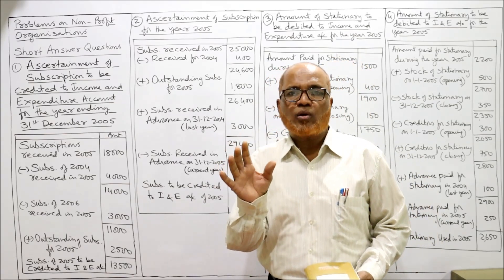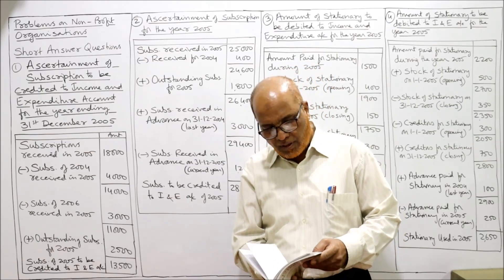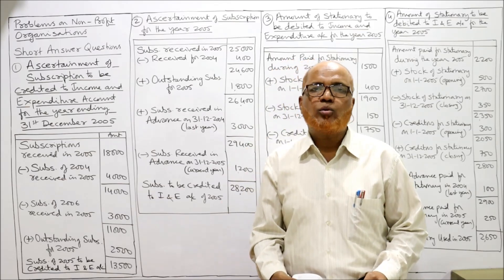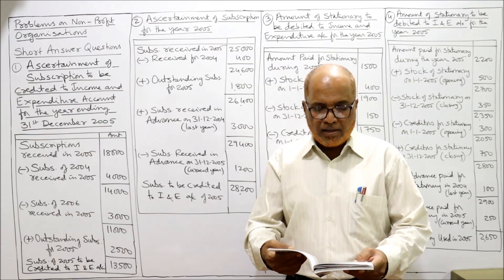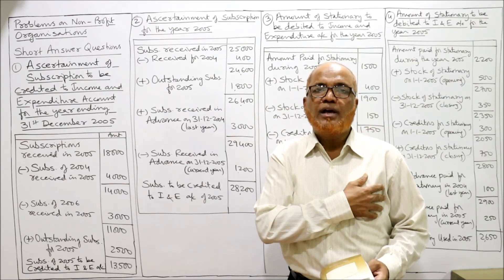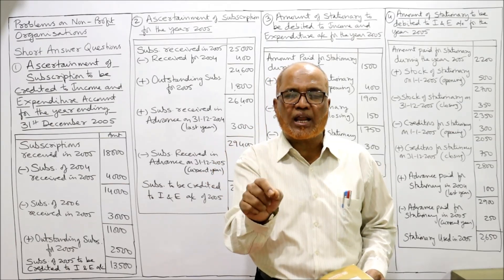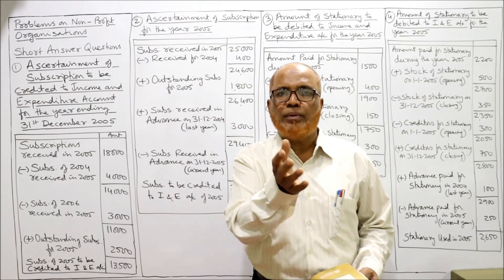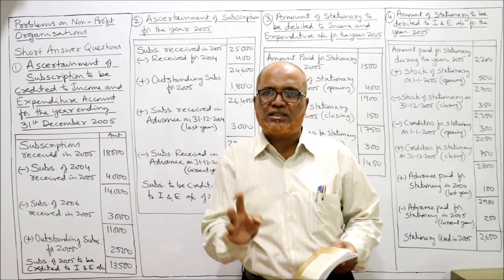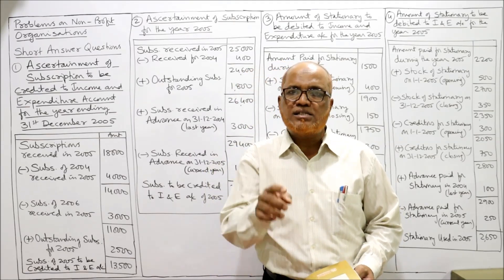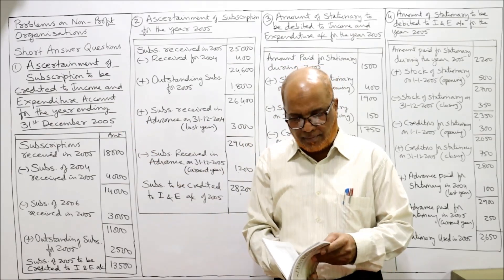Remember, we are calculating how much subscription to be credited to income and expenditure account for the year ending 31st December 2005. Subscription received in 2005: 18,000 — current year is 2005. Subscription of 2004 received in 2005 — that is last year's subscription received in current year — we deduct it. Similarly, subscription of 2006 received in 2005 — next year's subscription — we subtract it.